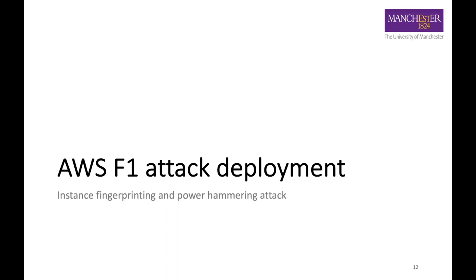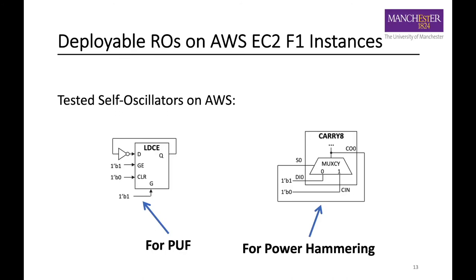We are now going to deploy the Denial-of-Service attack on the AWS F1 service. There are many deployable self-oscillating circuits that we have tested in the literature. For PUF, we are going to use the large latch ring oscillator on the left — the latch here is configured as a normal wire that sends signal from D to Q. For the power waster, we explored that the carry primitive is a good candidate, because we could create up to 8 ring oscillators out of one primitive, giving a decent and controllable power potential. You can see how a ring oscillator is created using the MUX inside the carry primitive — it behaves exactly like a lookup table configured as an inverter.